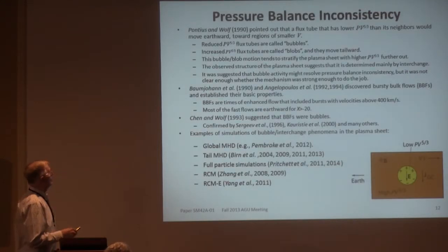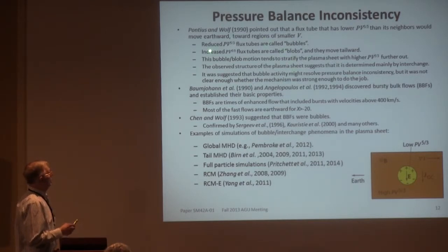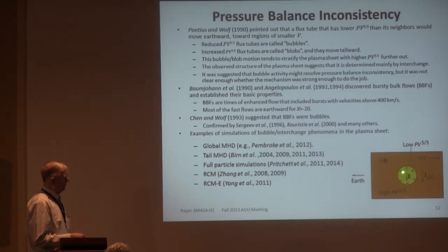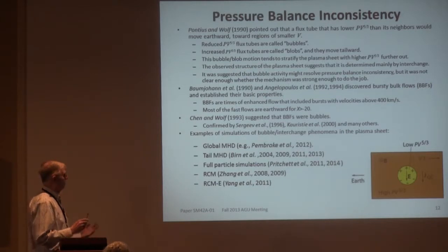Dwayne Pontius and I wrote a paper in 1990 pointing out that a flux tube with lower PV^gamma than its neighbors should move earthward toward regions of smaller flux tube volume — we call those depleted flux tubes 'bubbles.' And the reverse: if overpopulated with higher PV^gamma, we call those 'blobs,' and they should move tailward. The reason is that the westward cross-tail current through the bubble is smaller than in the surrounding medium because the bubble doesn't have much plasma. So the dawn side of the bubble charges up positive, the dusk side negative, giving an extra westward electric field that propels the bubble inward. It's just interchange.